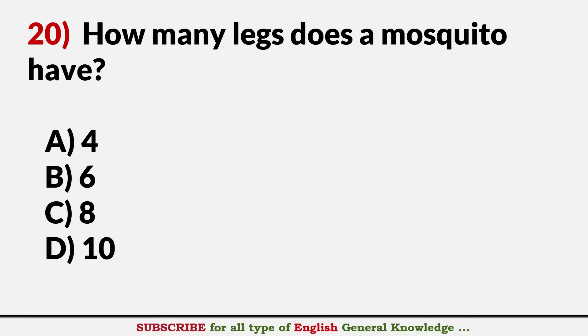How many legs does a mosquito have? Answer B. Six.